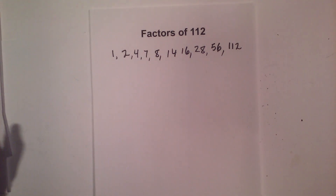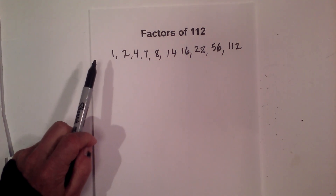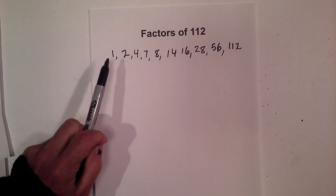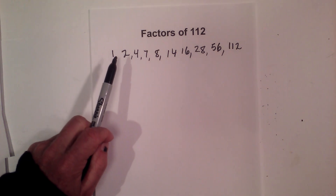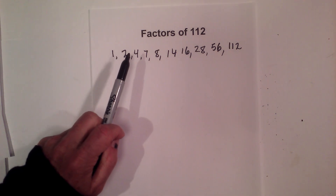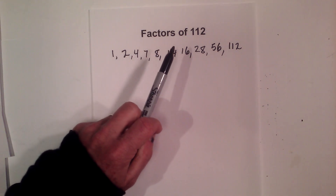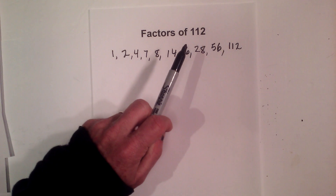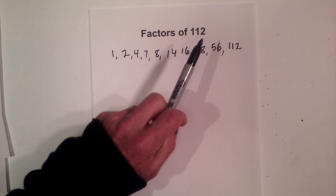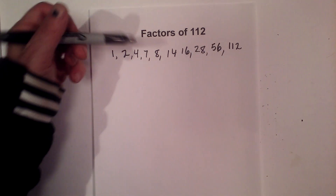So the factors of 112 are 1, 2, 4, 7, 8, 14, 16, 28, 56, and 112.